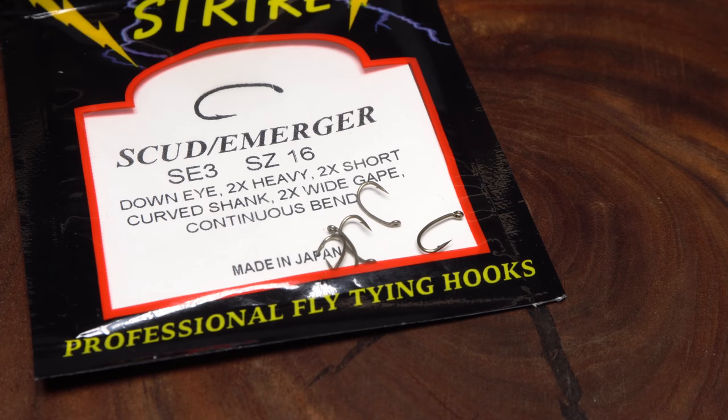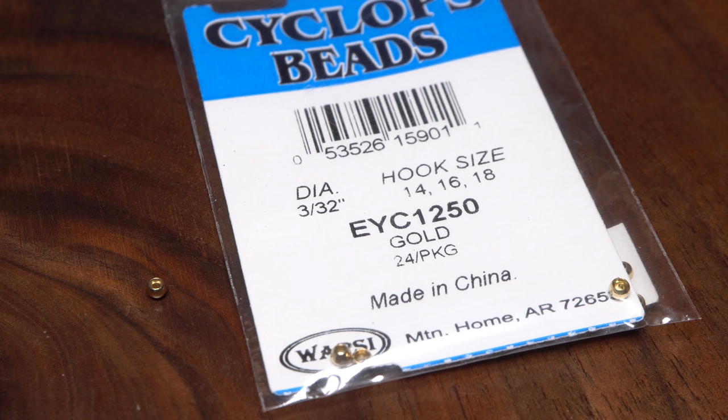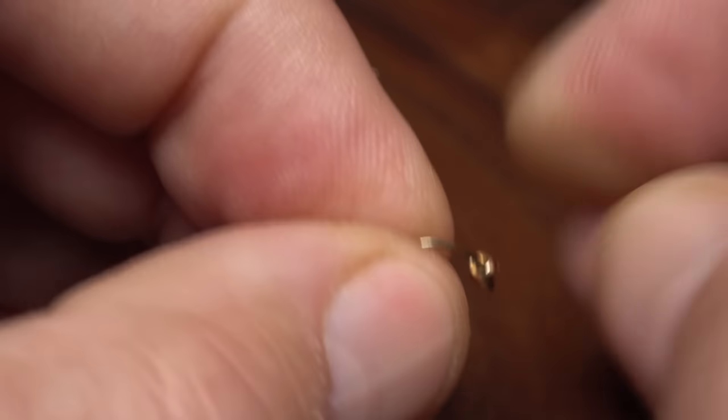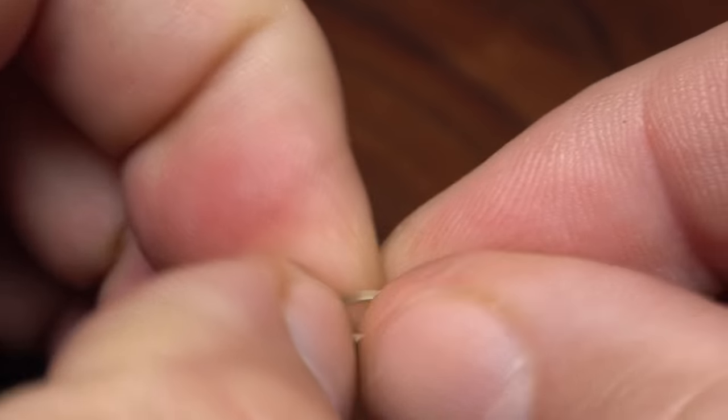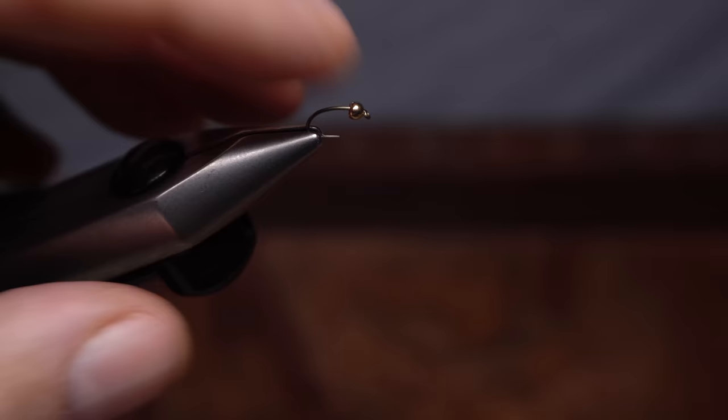I start with a Lightning Strike SE30 Scud Emerger Hook in size 16. I'll pair this with a 3/32nd of an inch gold bead. Insert the point of the hook into the small hole of the bead and work the bead around to behind the hook eye. You can then get the assembly firmly secured in the jaws of your tying vise.